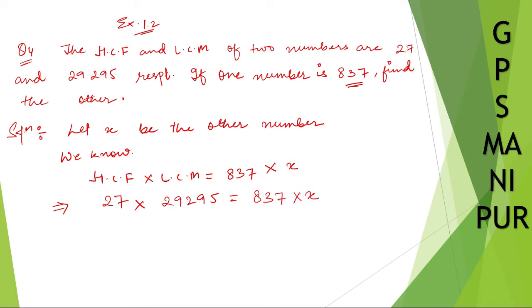Now we need to find the value of x. I hope you can understand so far. In order to find the value of x, you write down x here. I've taken this one to this side. It is equal to 27 into 29295 divided by - taking this number to this side it will be - divided by 837.